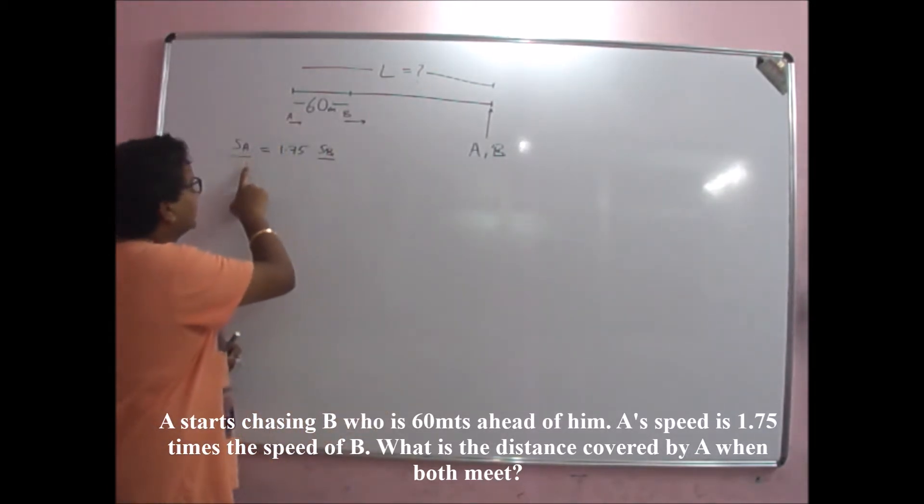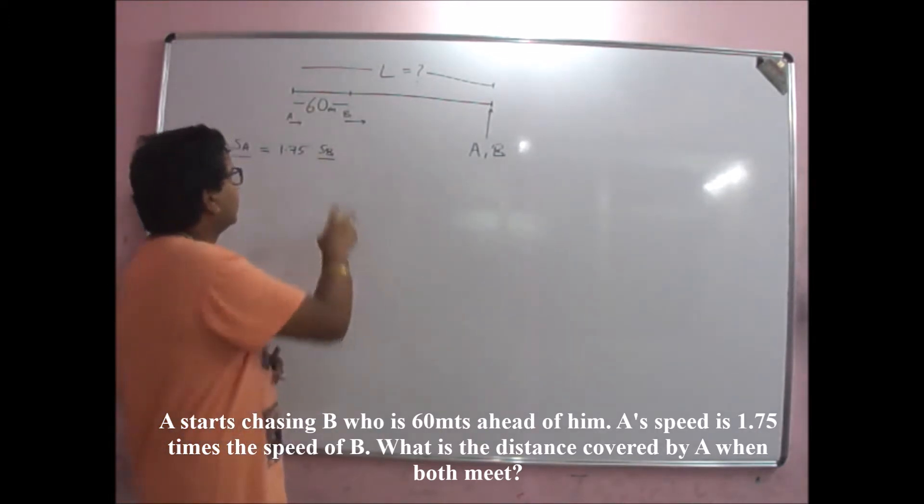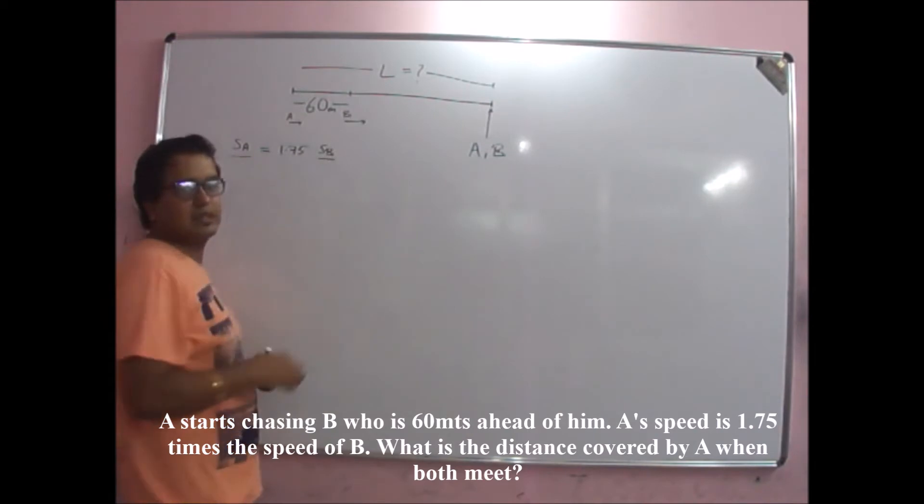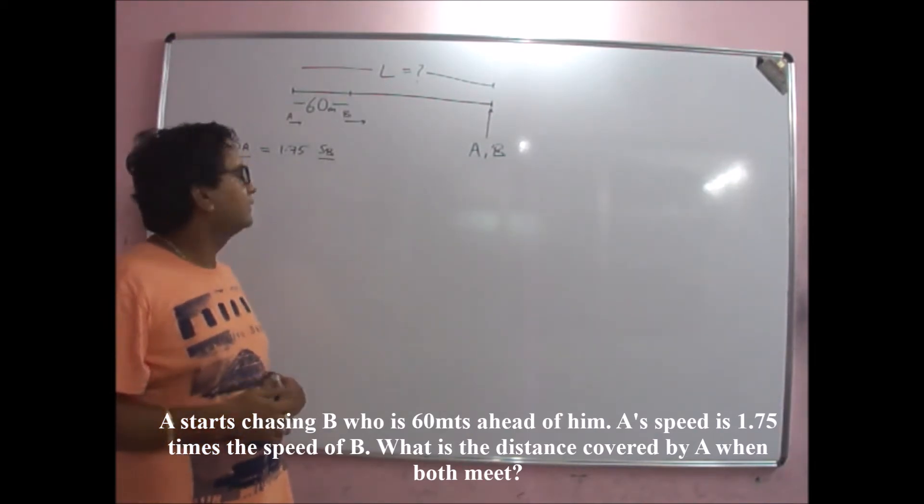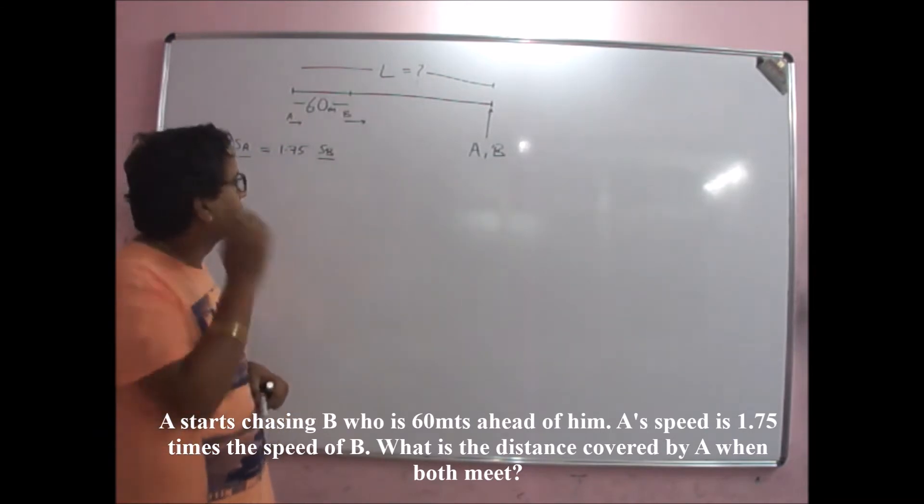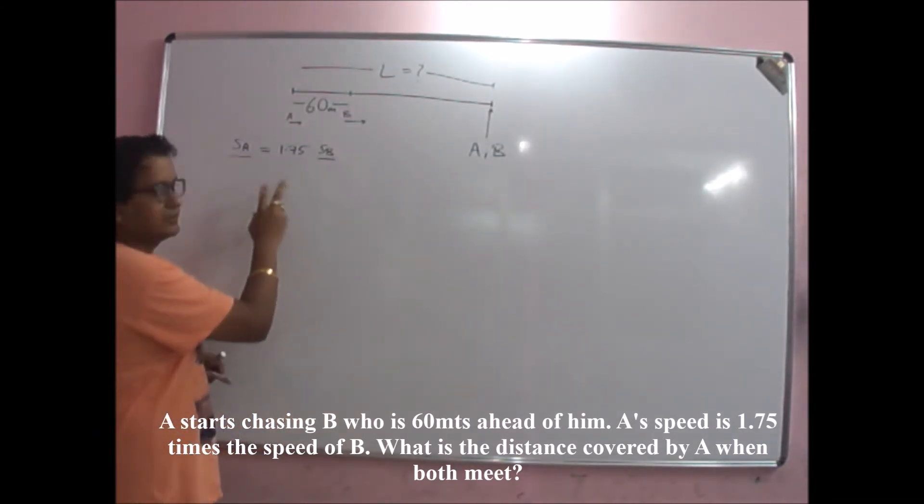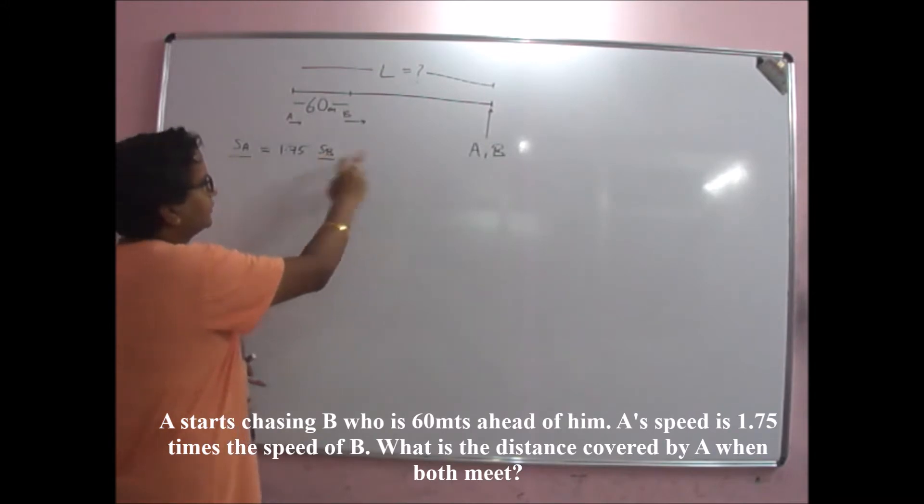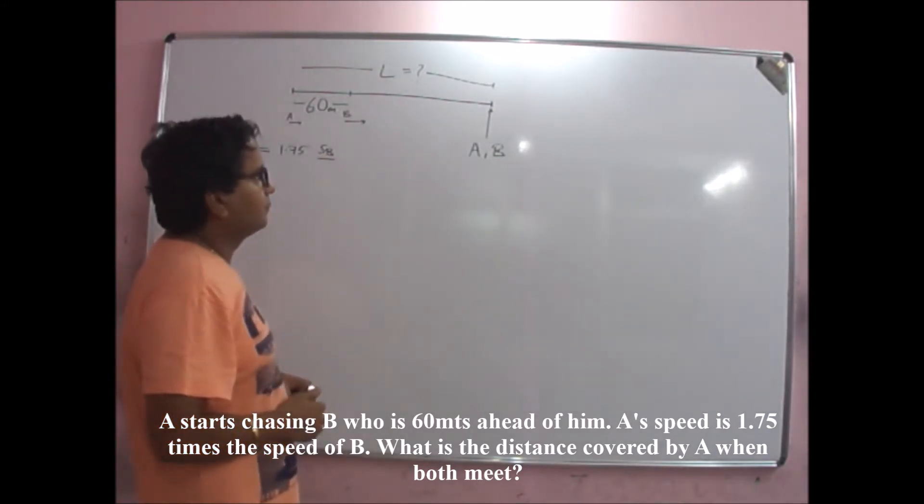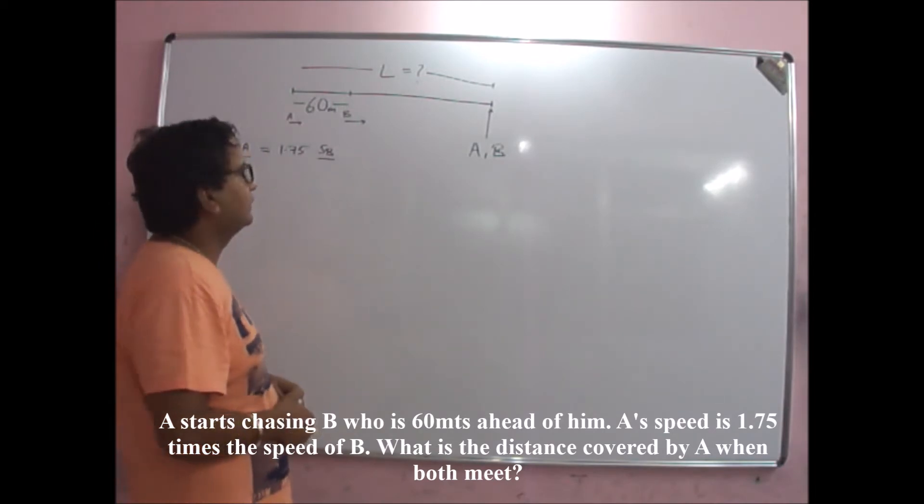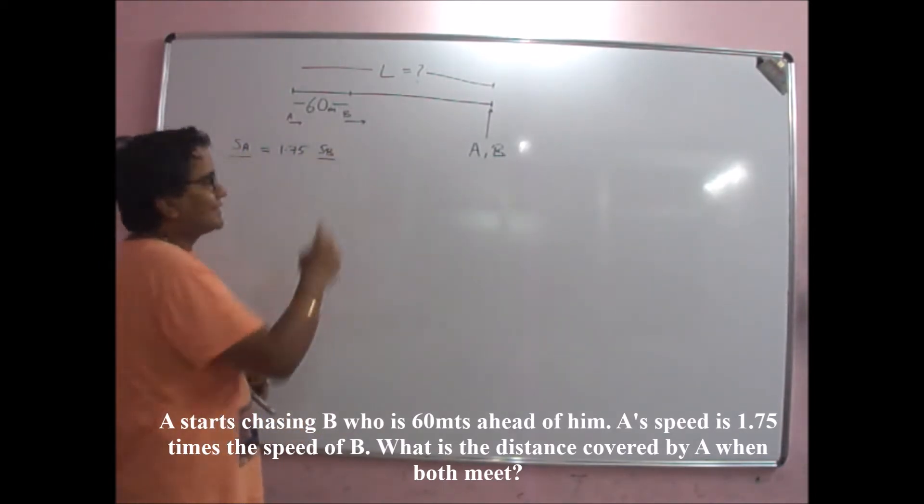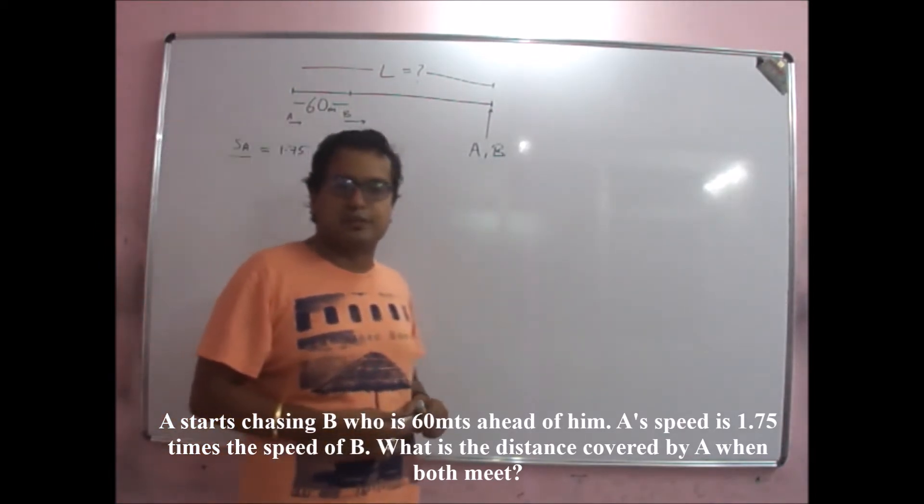The ratio of speed of A to speed of B is 1.75. B has a head start of 60 meters which means A is catching up with B. Now it is given in the question that when both meet, which means A is able to catch B, the total length is L and that is what we are supposed to find.